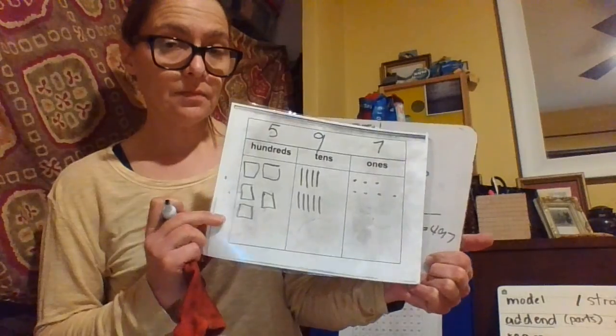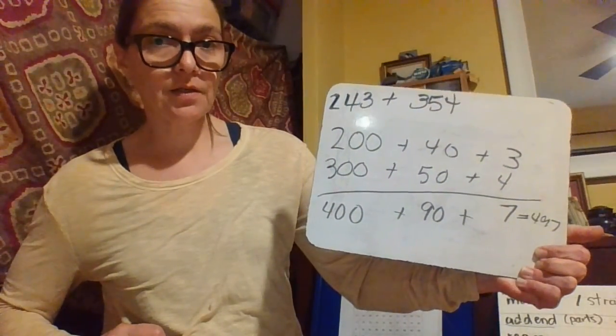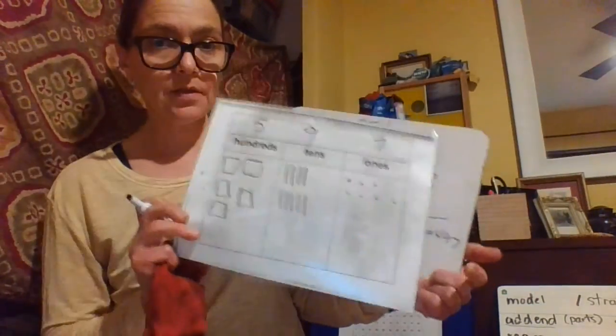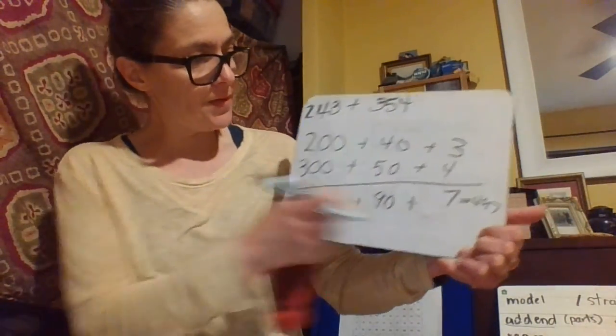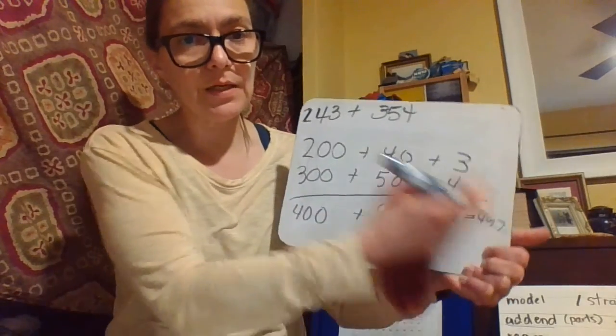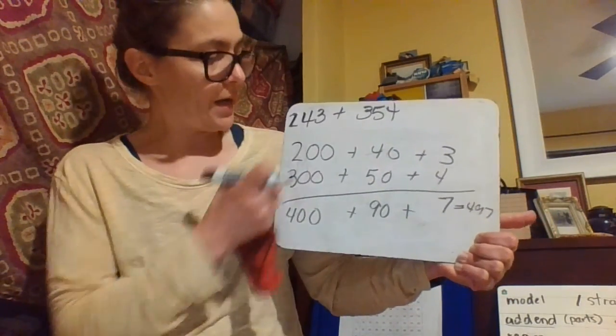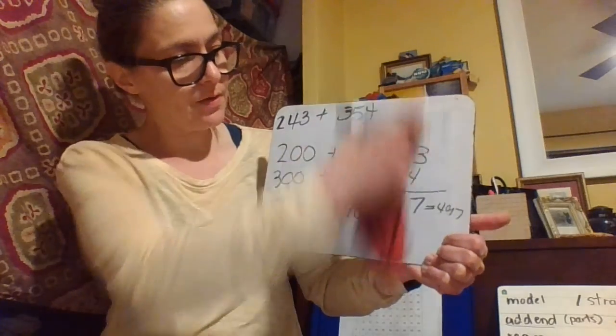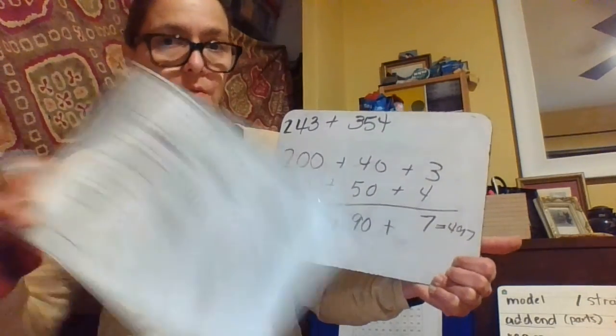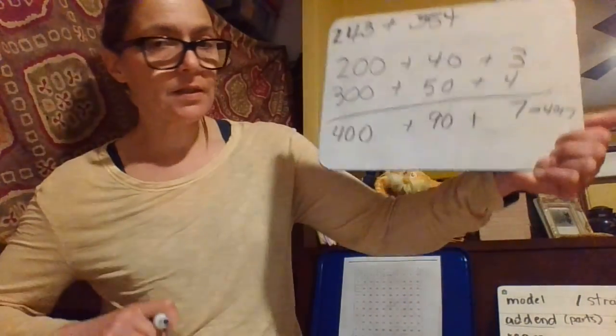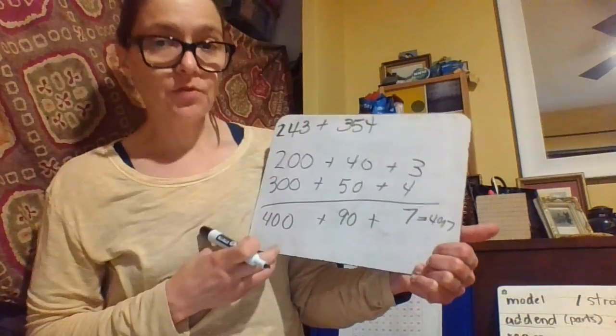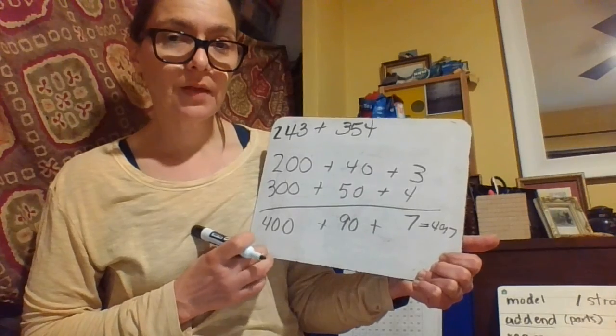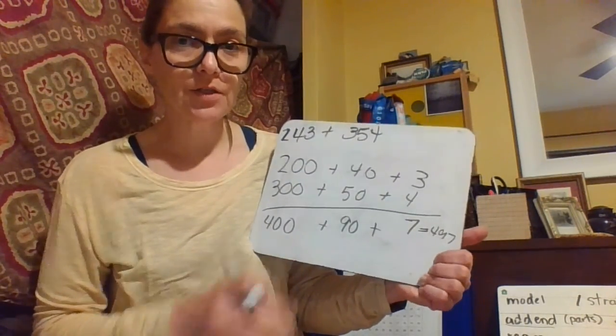This is the model, and this is the strategy. This is the model - I drew them out and then I counted them up. And this is the strategy. This explains how I did it. I added the hundreds, I added the tens, and I added the ones. When I did it with the model. When I did it with the strategy, I added the ones first, the tens, and then the hundreds. So difference between model and strategy.